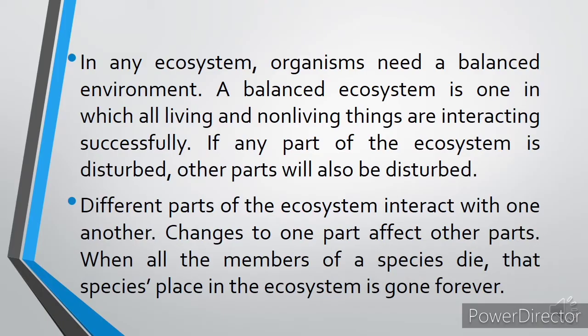In any ecosystem, organisms need a balanced environment. A balanced ecosystem is one in which all living and non-living things are interacting successfully. If any part of the ecosystem is disturbed, other parts will also be disturbed. Different parts of the ecosystem interact with one another, and changes to one part affect other parts. When all members of a species die, that species' place in the ecosystem is gone forever.